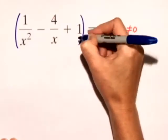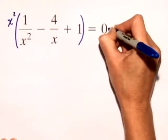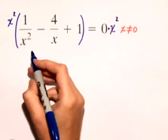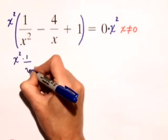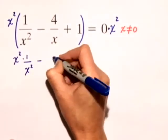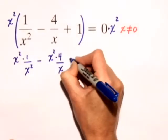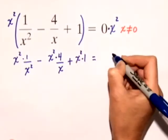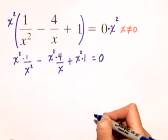So we'll take the entire left-hand side, multiply it by x squared, and we'll do the same to the right-hand side. Let's distribute this x squared through. We have x squared times 1 over x squared minus x squared times 4 over x plus x squared times 1, and that's equal to 0 times x squared, which is just 0.